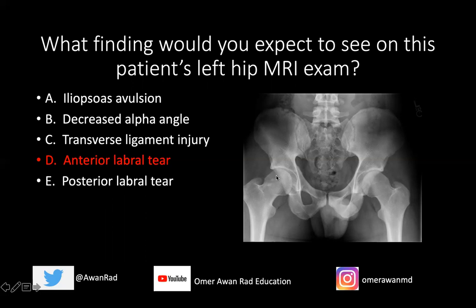We know that these patients get anterior superior labral tears, and they have a predisposition to early osteoarthritis. We can already see in this 20-something-year-old some subchondral sclerosis and a developing subchondral cyst along the superior lateral acetabulum. No 20 or 25 year old should have stigmata of osteoarthritis unless they have a predisposing condition like FAI or trauma leading to post-traumatic osteoarthritis.